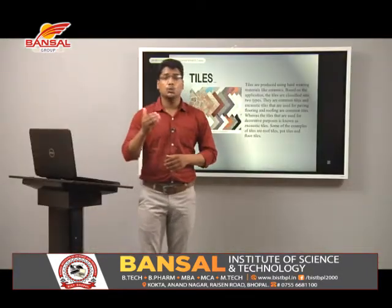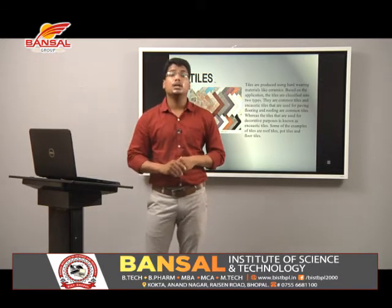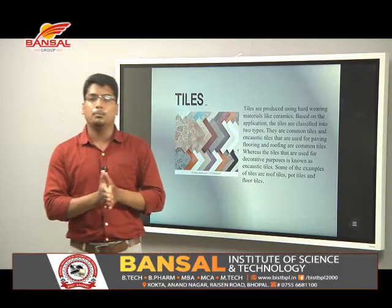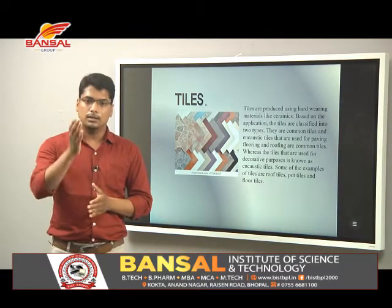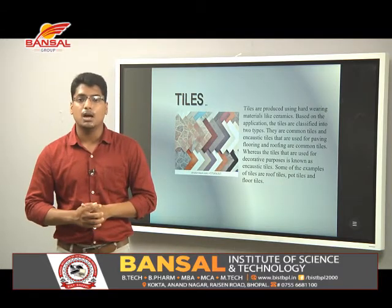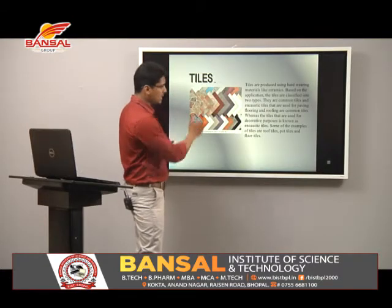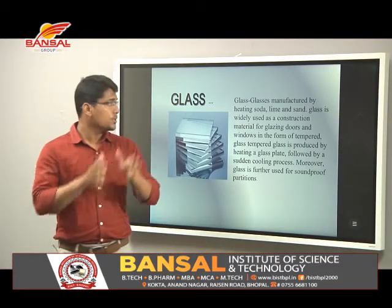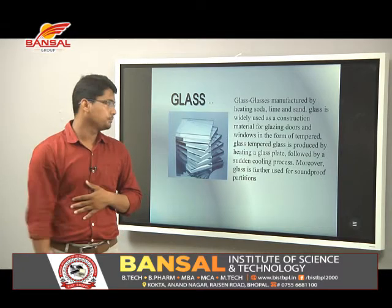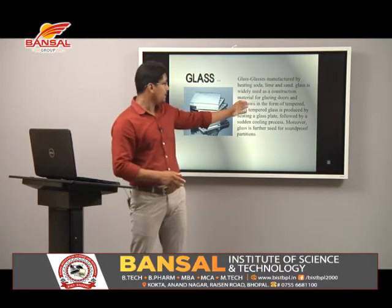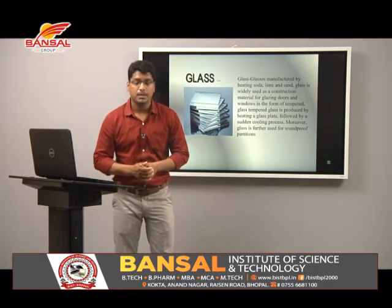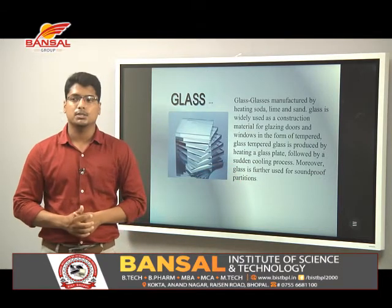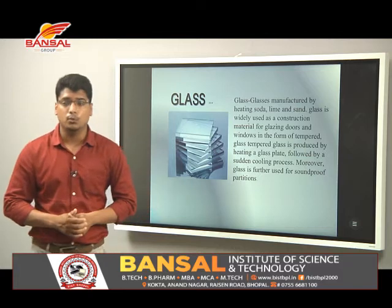Tiles are produced using hard-bearing materials like ceramics. Based on applications, tiles are classified into two types: common tiles and encaustic tiles. Tiles used for paving, flooring, and roofing are called common tiles, while tiles used for decorative purposes are known as encaustic tiles. Examples include roof tiles, pot tiles, and floor tiles. Glass is manufactured by heating soda, lime, and sand. Glass is widely used in construction for glazing doors and windows using tempered glass, which is produced by heating a glass plate followed by sudden cooling. Glass is also further used for soundproofing.